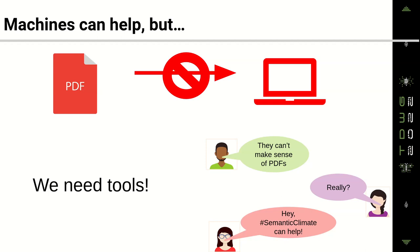One could say: if people can't read this, then what about machines? But PDF is not a good format for machines to work with either. So we need tools that help us make sense of the information that is kind of hidden in these PDFs.